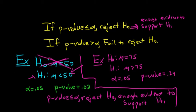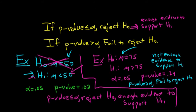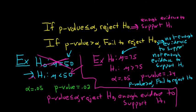So in this case, the p-value is bigger than alpha, so we fail to reject H₀. When we fail to reject H₀, then we don't have enough evidence to support H₁. So in this case, there is not enough evidence to support H₁.